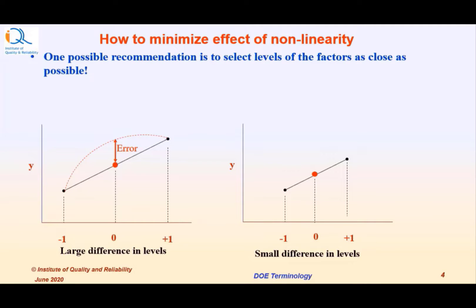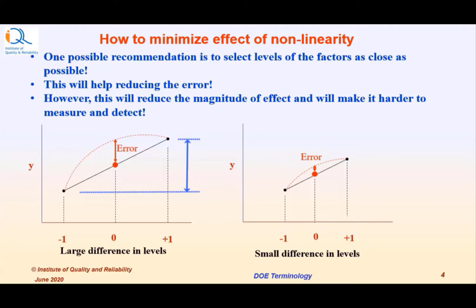One possible recommendation is to select levels of the factors as close as possible. As shown in the two figures, you can see that this will help in reducing the error. However, this will reduce the magnitude of the effect also and will make it harder to measure and detect the effect.